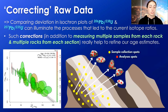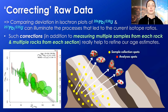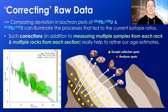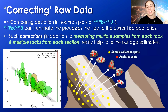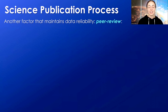Such correction processes include careful sample preparation and selection, testing to identify contaminants, isochron plots which identify and help subtract initial daughter isotope effects, and using our most updated decay constants. Such corrections, in addition to measuring multiple samples from each rock and multiple rocks from each section, really help to refine our age estimates.